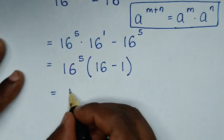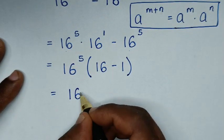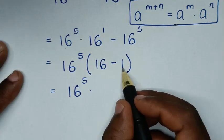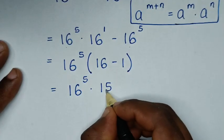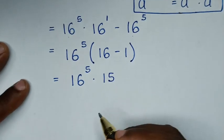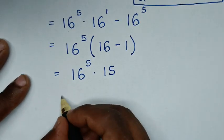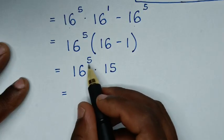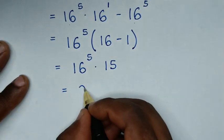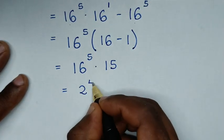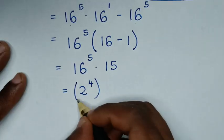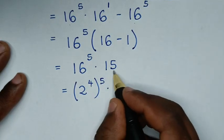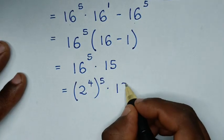It will be equal to 16 power of 5. Now, 16 is the same as 2 power of 4, so this becomes bracket 2 power of 4, with the power of 5, times 15.